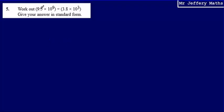This is question 5. Here we're asked to work out 9.5 times 10 to the power of 9, divided by 3.8 times 10 cubed. And we're asked to give our answer in standard form.